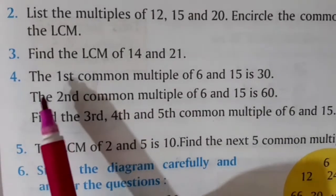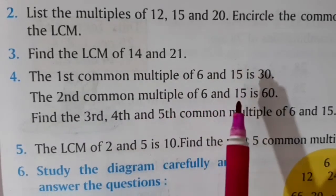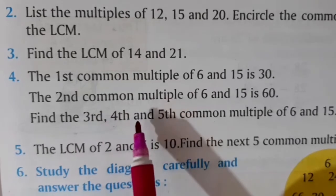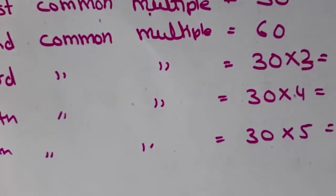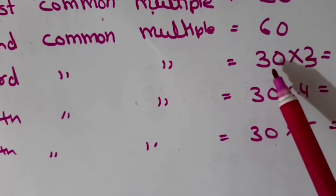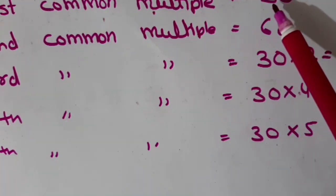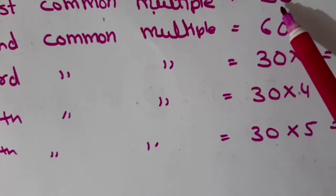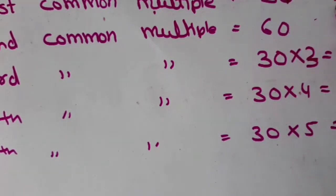Question number 4: the first common multiple of 6 and 15 is 30. The second common multiple of 6 and 15 is 60. Find the third, fourth and fifth common multiple of 6 and 15. The first common multiple is the LCM. You have to multiply the LCM with the counting number. Multiplying LCM by 1 gives the first common multiple. Multiplying LCM 30 by 2 gives 60, the second common multiple.